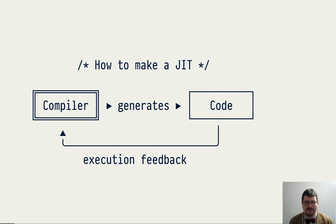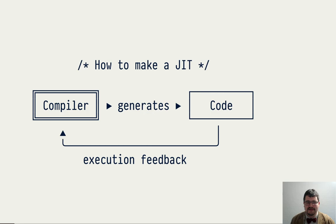By 2012, when we started building a just-in-time compiler for Dart, it was already pretty clear how to build a good JIT. The secret is that you need to create a loop between execution of the code and compilation. A compiler starts by generating some code, the code runs, and then it feeds information about the state of the program and what happened during execution back to the compiler. The compiler uses this information to produce more efficient versions of the code, and so on until the system stabilizes.